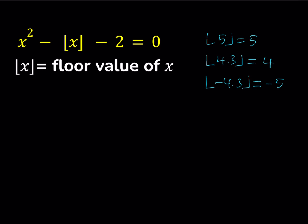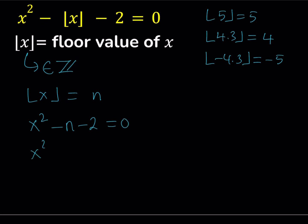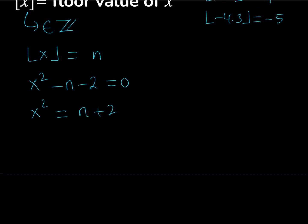One thing to remember is that the floor value of x is always an integer. So let's set floor value of x equal to n. Then we get x squared minus n minus 2 equals 0. From here we can solve for x: isolate x squared and then square root both sides. When you square root both sides, you have to be careful because there are two values.